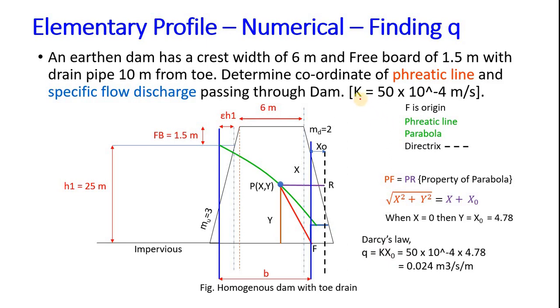Now using Darcy's law, q equals k times x₀. We already know the value of k from the question and x₀ we already found in the previous slide which was 4.78. Now when you substitute it we will get the specific discharge.